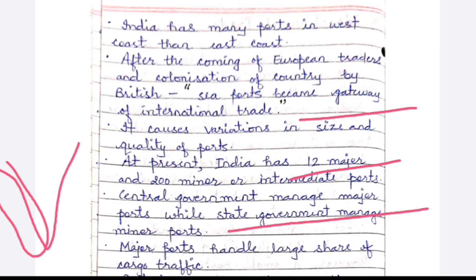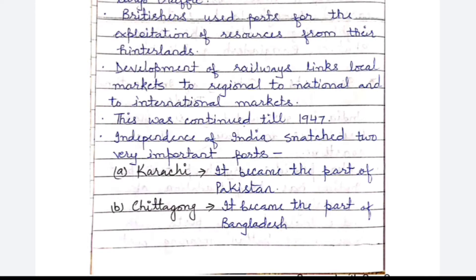Central government manages the 12 major ports while state governments manage minor and intermediate ports. Major ports handle the largest share of cargo traffic — that is, the import and export commodities from India are handled mostly by these 12 major ports.